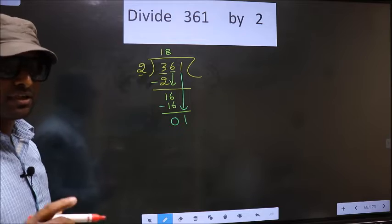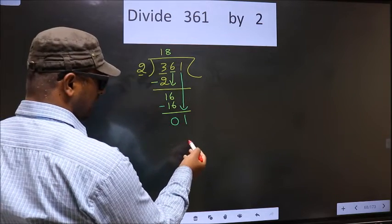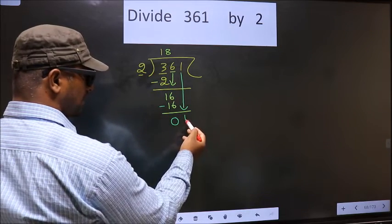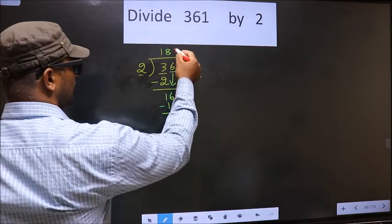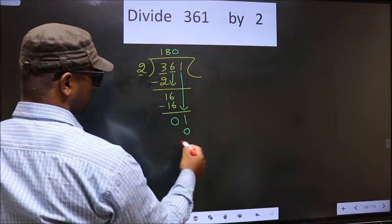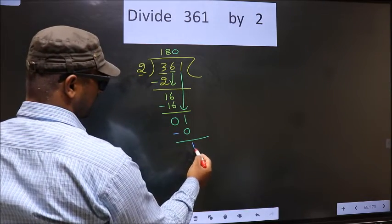Instead, what you should think of is what number should we write here. If we write 2 here, that is larger than 1. So what we do is we take 0 here. So 2 into 0, 0. Now you subtract. 1 minus 0, 1.